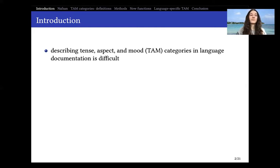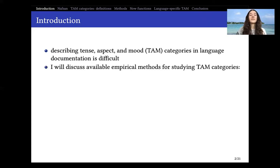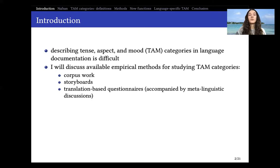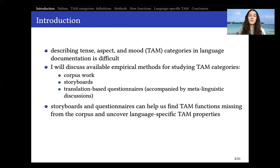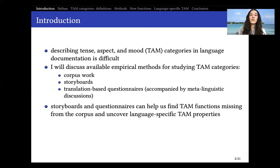In order to bridge this gap a little bit, I will be discussing today some of the available empirical methods for studying TAM categories based on my experience with them in my fieldwork on Nafsan. These methods are corpus work, storyboard stimuli, and translation-based stimuli or questionnaires, which are also often accompanied by metalinguistic discussions, which I will argue play sometimes a big role in determining different categories. I will also argue that storyboards and questionnaires can help us find TAM functions that might be missing in the corpus, or uncover some specific properties of TAM in the language we are studying.